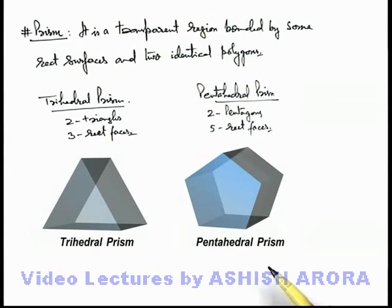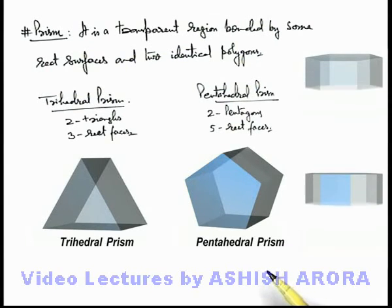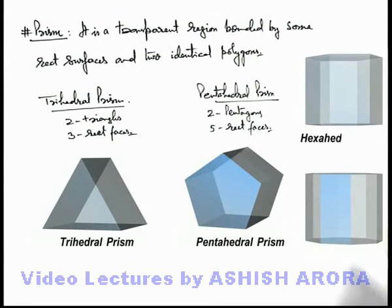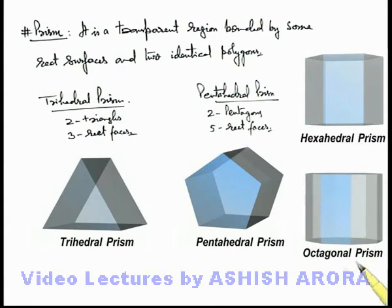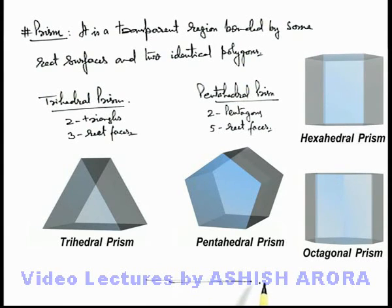Similarly you can define various different kinds of prisms. For example, a hexahedral prism in which there are 6 rectangular faces and 2 hexagons, and an octagonal prism in which there are 2 octagons and 8 rectangular faces. So this is the way how we define a prism. In the coming section, we are going to study about refraction through a prism made up of different medium.